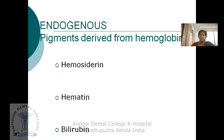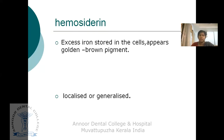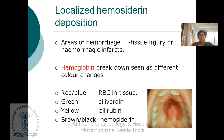Moving on to endogenous pigmentation, these are pigments derived from hemoglobin and can be classified as hemosiderin pigmentation, hematin pigmentation, and bilirubin pigmentation. Hemosiderin pigmentation causes brown discoloration due to excess storage of iron in the cells, and may be localized or generalized. Localized hemosiderin deposition is seen in areas of hemorrhage due to tissue injury. Hemoglobin breakdown can show different color changes: red or blue due to RBCs in tissue, green due to biliverdin, yellow due to bilirubin, and brown-black due to hemosiderin.